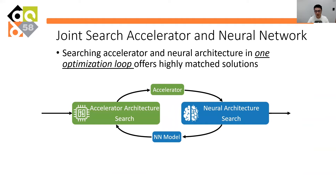Given the large design space, it is challenging to achieve holistic optimization by human design. We propose Neural Accelerator Architecture Search (NAAS). For a specific workload, the Accelerator Architecture Search and NAS are conducted in one optimization loop to get a tailored hardware and tailored neural network.